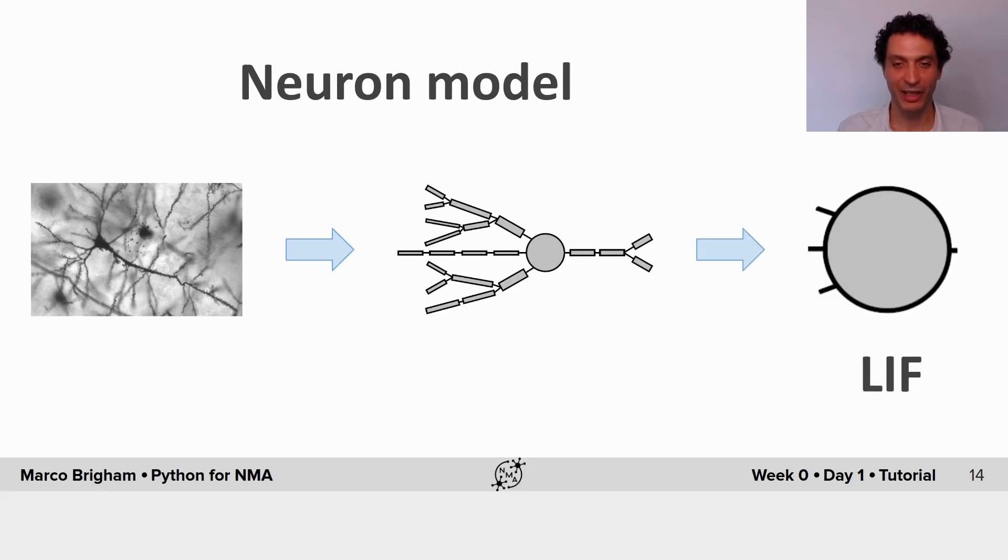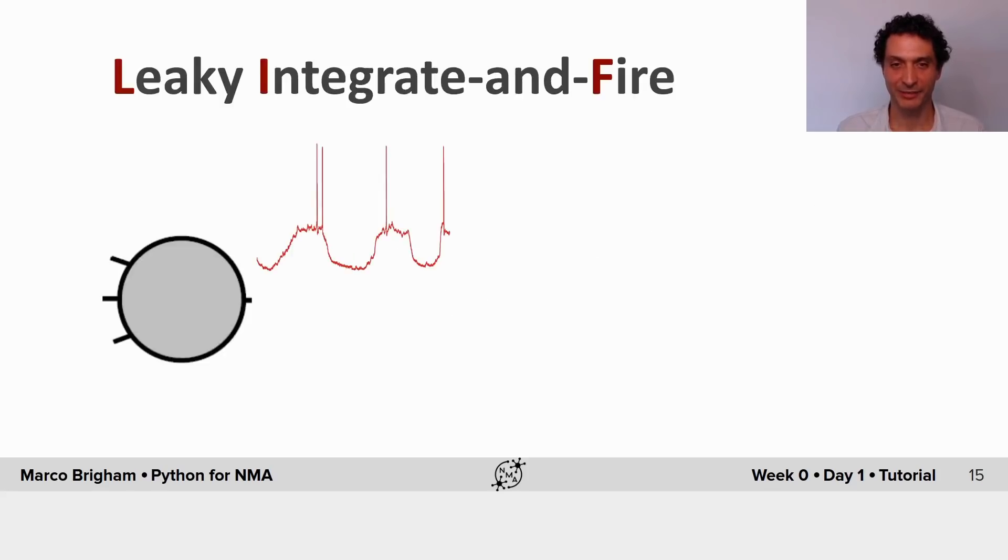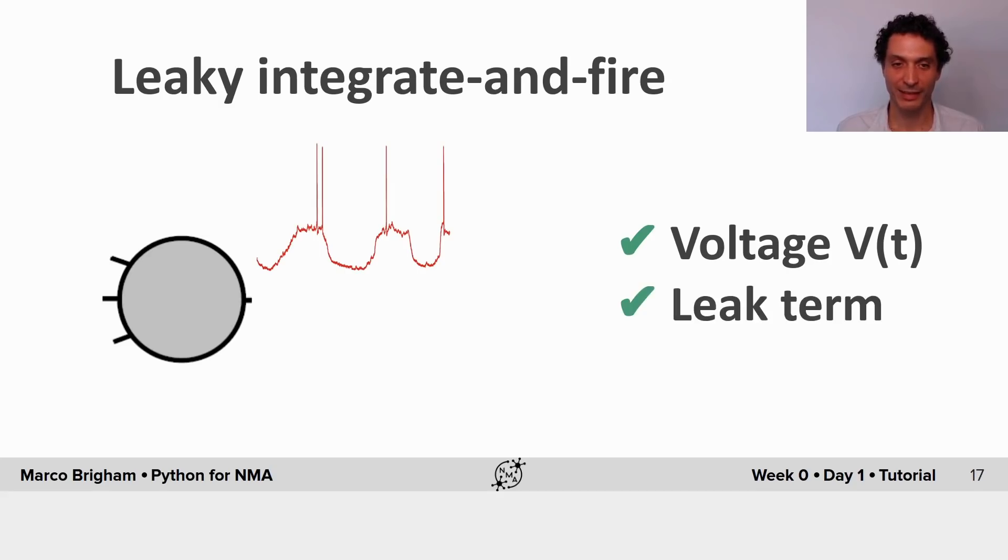It doesn't model any physical aspects of the neuron in terms of morphology, but it does model some very interesting things. LIF stands for Leaky, Integrate and Fire. And basically, this neuron, it models the membrane potential voltage. It has a leak term and it can spike. So we'll go more into detail a little bit about each one of these aspects.